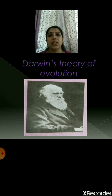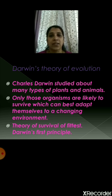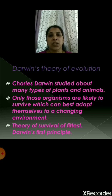Now let's move to Darwin's theory of evolution. Charles Darwin was a biologist who studied various types of plants and animals. He made a suggestion that only those organisms are likely to survive which can best adapt themselves to a changing environment. This theory is called the theory of survival of the fittest, and this is Darwin's first principle. If you are asked to define it, you write: only those organisms are likely to survive which can best adapt themselves to the changing environment.